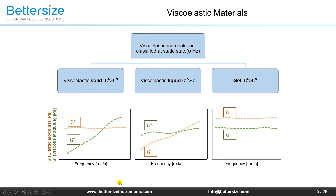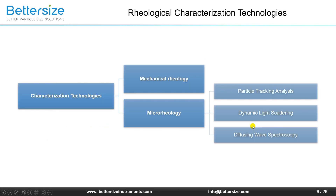Viscoelasticity is the property of materials that have both viscous and elastic properties when deformed. In a static state at 0 Hz frequency, we can classify viscoelastic materials into three typical types: viscoelastic solid, viscoelastic liquid, and gel. For a viscoelastic solid, G-prime is constant and dominates at low frequencies, while G-double-prime increases and dominates at high frequencies. For a viscoelastic fluid, G-double-prime exceeds G-prime at low frequencies and G-prime exceeds G-double-prime at high frequencies. For a gel-like material, G-prime and G-double-prime are parallel over the entire frequency range.